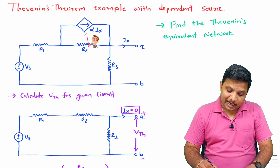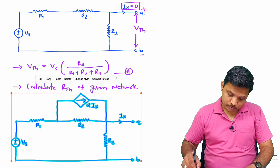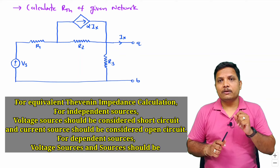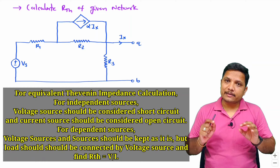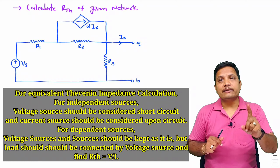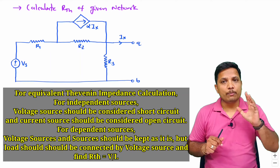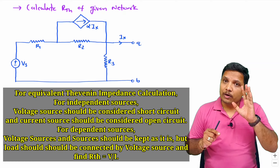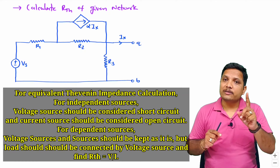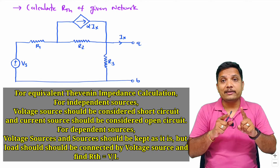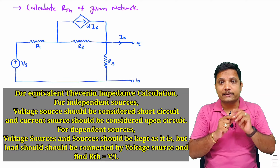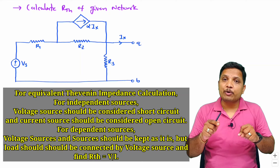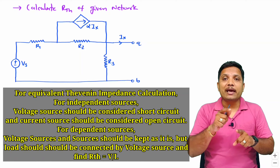Our next goal is to find RTH of this network. Whenever you want to calculate RTH, there are few things to note. For independent sources, voltage sources should be considered as short circuit and current sources should be considered as open circuit. But for dependent sources, we don't need to replace anything — they should remain as they are. At the load terminal, we should connect a supply voltage V, which produces current I, and the ratio V divided by I will be our RTH.